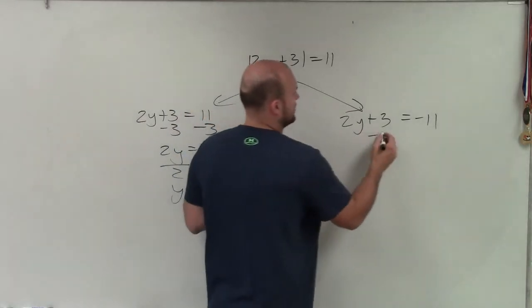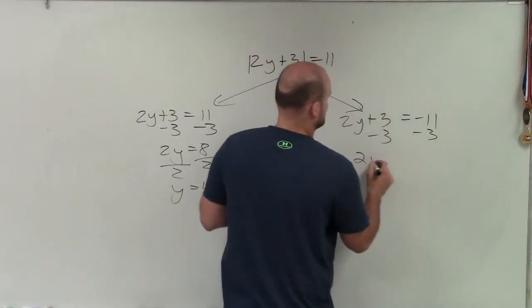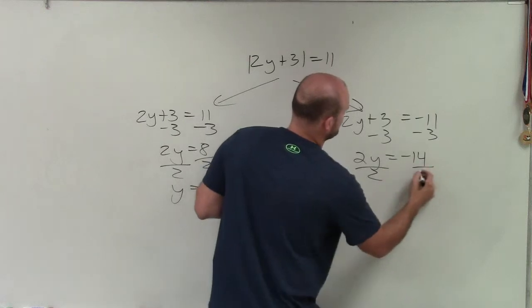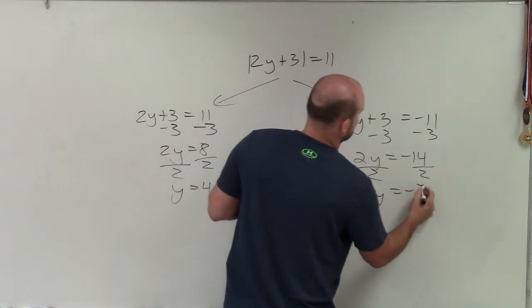Then I could also say, subtract 3, subtract 3. Say 2y is equal to negative 14, divide by 2, divide by 2. y equals negative 7.